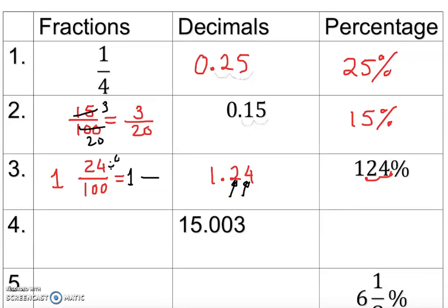We divide by 4: 24 divided by 4 is 6, and 100 divided by 4 is 25. So the result is 1 and 6 over 25. That is how you convert a percentage into a mixed fraction.